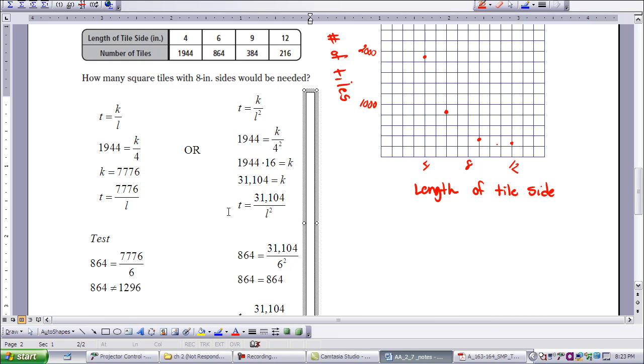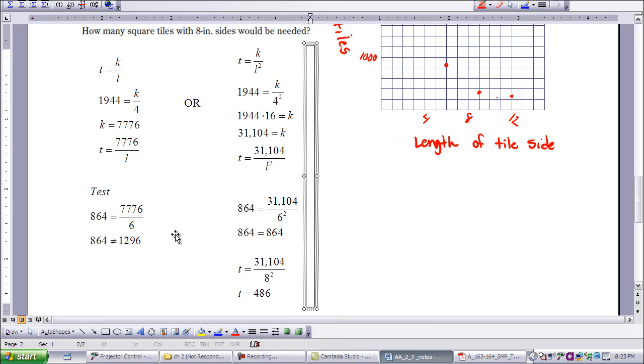So now I make my specific equation again. T equals 31,104 over L squared. So now we test another data point. I'm going to use 6 and 864 again. Put that in place of L and T. So 31,104 divided by 6 squared is, in fact, 864. So I know that this variation equation matches my data.